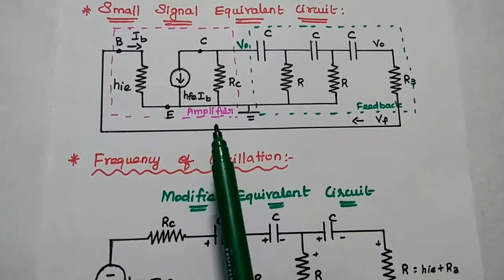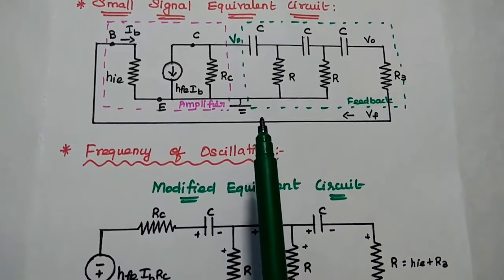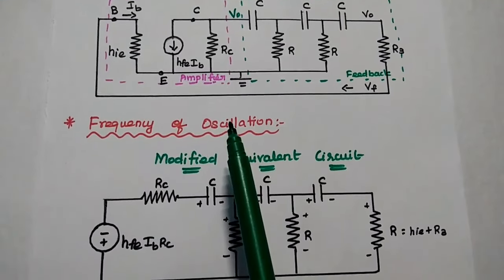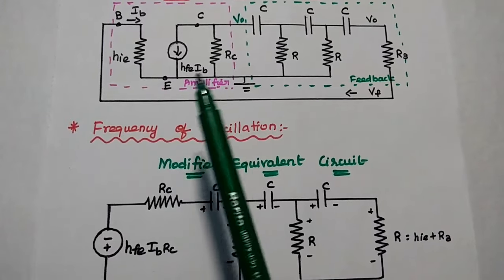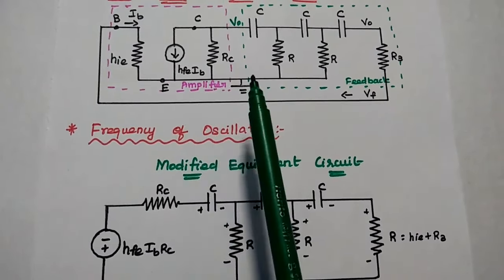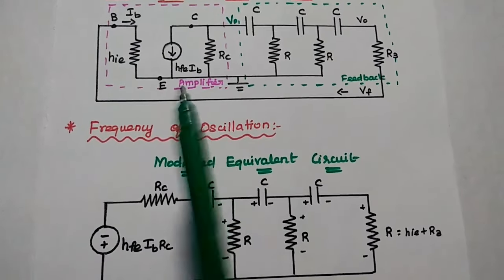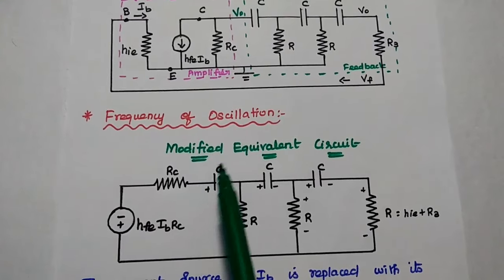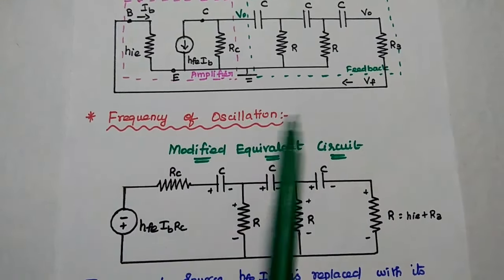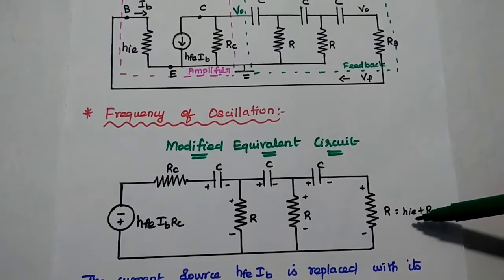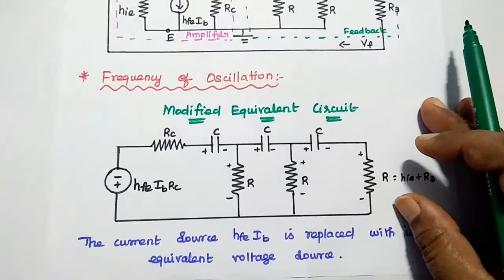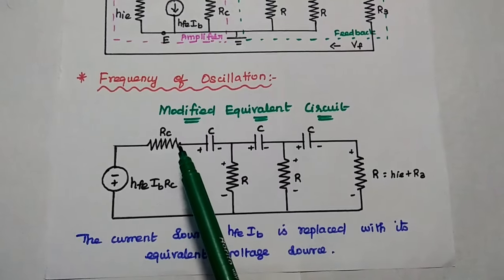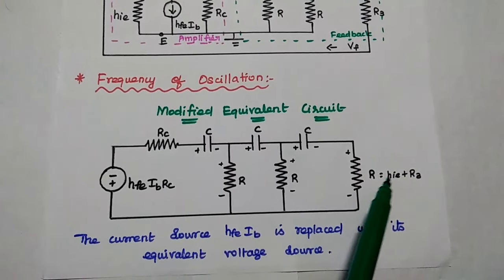This is the overall small signal equivalent circuit for the RC phase shift oscillator. Next, we are going to derive the frequency of oscillation. For that, we can simplify this small signal equivalent circuit further by changing the current source to a voltage source — that is the first step. The current source is represented as Norton's theorem, while the voltage source is Thevenin's theorem — a voltage source in series with a resistor. Here R3 and H_IE are both in series, so we can combine them as R = H_IE + R3.